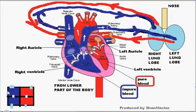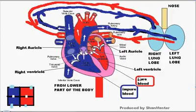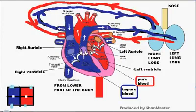The right side of the heart deals with blue color blood. Blue color blood is called impure blood. The left side of the heart deals with red color blood, which is pure blood. Oxygenated blood is pure blood; carbonated blood is called impure blood. We represent impure blood with blue color and pure blood with red color, so you can follow the flow of each.